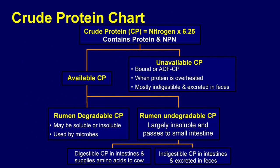Available crude protein can be divided into rumen degradable and rumen undegradable fractions. The rumen degradable crude protein can be either soluble or insoluble and is used by the microbes for protein synthesis. Rumen undegradable crude protein is largely insoluble and passes to the small intestine, where it is partitioned into digestible and undigestible fractions. The crude protein digested in the small intestine supplies amino acids to the cow, and the undigested crude protein is excreted in the feces. This concludes the module on protein terminology.